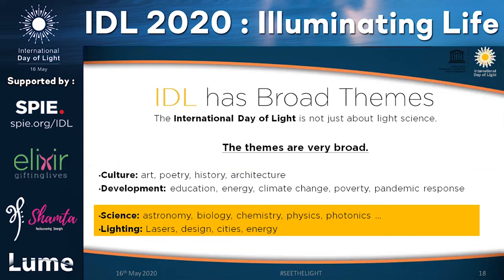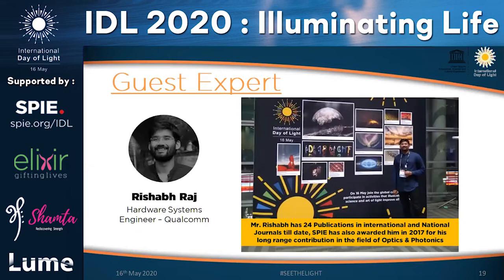It's really commendable what you are doing for people struck by COVID-19. To take you through science and lighting, we have Mr. Rishabh Raj, a young scholar scientist and hardware systems engineer at Qualcomm. He has 24 publications in international and national journals to date, and SPIE awarded him in 2017 for his long-range contributions in optics and photonics.